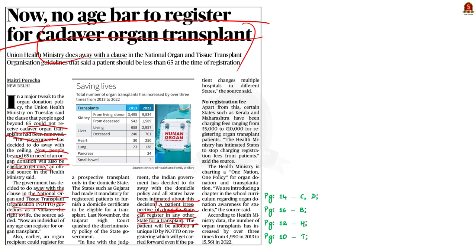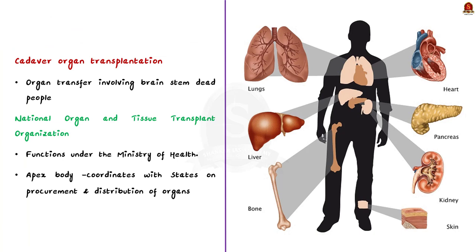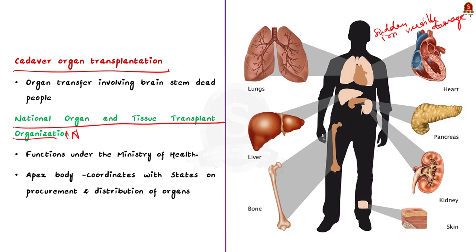Let us learn a few facts about cadaver organ transplantation and the rules regarding it in India. Cadaver organ transplantation refers to organs which are sourced from brain-dead people and transplanted to those who require them. Cadaver organ donors must be those who have suffered sudden, structural and irreversible damage of the brain. The guidelines regarding organ transplantation are brought out by the National Organ and Tissue Transplant Organization, shortly called NOTTO, which functions under the Ministry of Health. NOTTO is the apex body that coordinates with states on the procurement and distribution of organs in compliance with the Transplantation of Human Organs Act (THOA).